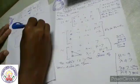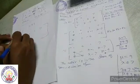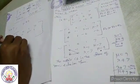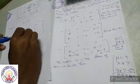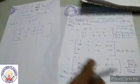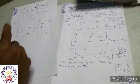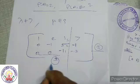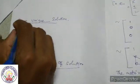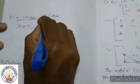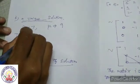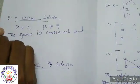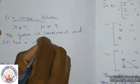When mu is not equal to 9 and lambda is not equal to 7: the matrix row 3 has a non-zero last entry, giving rank of A equal to 3 and rank of AB equal to 3, with number of unknowns equal to 3. Unique solution: lambda is not equal to 7. The system is consistent and it has a unique solution.